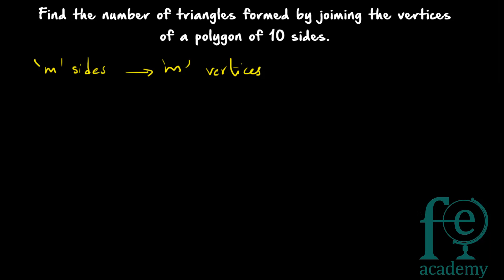Any polygon you take: if there are m sides there will be m vertices. A triangle has three vertices — a triangle is formed by joining three vertices. So the task is to find how three vertices can be selected from these m vertices. In total there are m vertices and you have to select three, which can be done in mC3 ways — it is a case of combination.